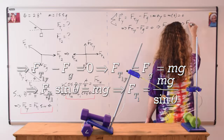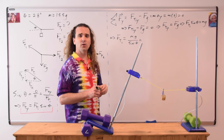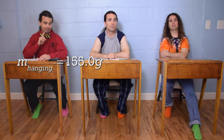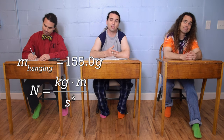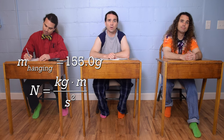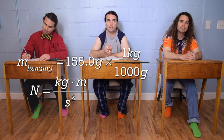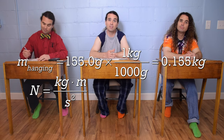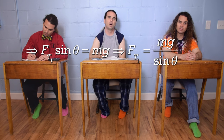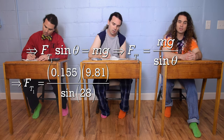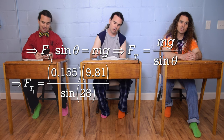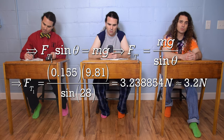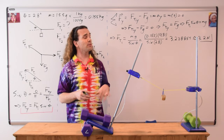Can we plug in numbers now? Absolutely — now that we know everything in the equation, we can substitute in numbers. First, we need to convert the mass to kilograms, because a newton is a kilogram times meters per second squared. So, 155 grams times one kilogram over a thousand grams gives us 0.155 kilograms. Therefore, the force of tension one equals 0.155 times 9.81 divided by the sine of 28 degrees, which is 3.238854, or with two sig figs, 3.2 newtons. We have solved for force of tension one.